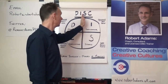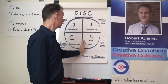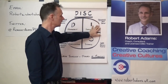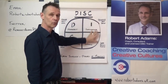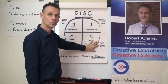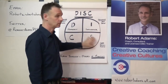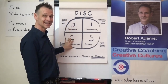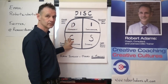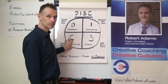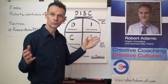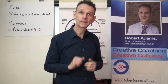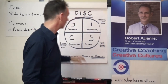Now if you split the quadrant this way, then on this side they have what's called people orientated people, and on this side they have task orientated people. So what we'll do now is we'll go through each of the four and explain what they are.